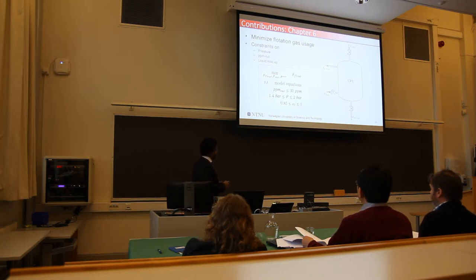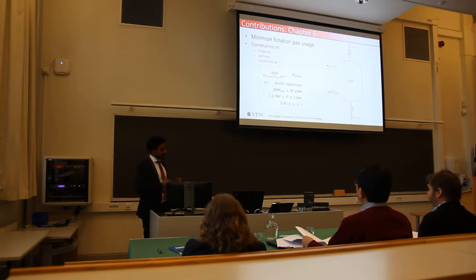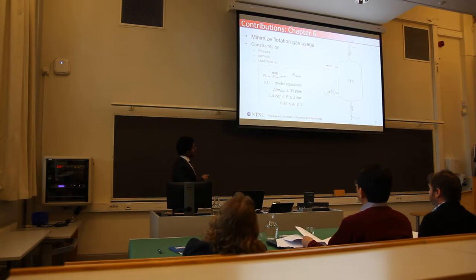And the liquid holdup is constrained between 0.85 and 1. Assuming that in operational conditions, if the liquid holdup is lower than 85%, we start to see gas in the water stream. Assuming that these are things that we gain from process knowledge or talking to operators, this is how I formulate these constraints. And then we have these degrees of freedom: the choice of the pressure, the choice of how much water to take out here, and how much gas to feed in here.